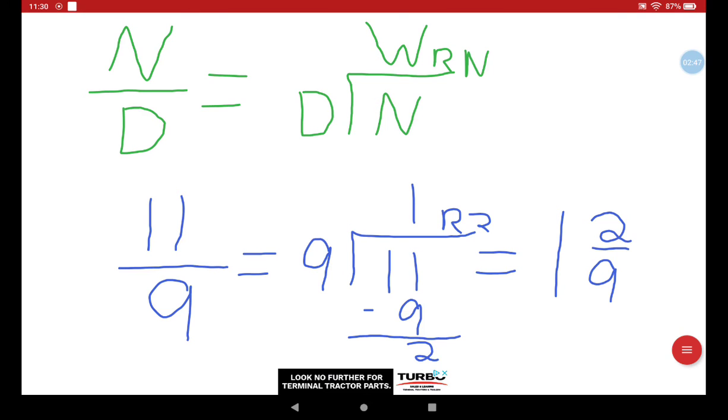So out of 11 ninths, that means you ate 1 whole pie and 2 extra pieces. Oh my goodness. So 11 ninths equals 1 and 2 ninths.